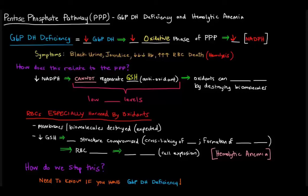And that acted as an antioxidant. So if we can't regenerate GSH because we have low levels of NADPH, we're going to have low levels of GSH, which means we have low levels of antioxidants.